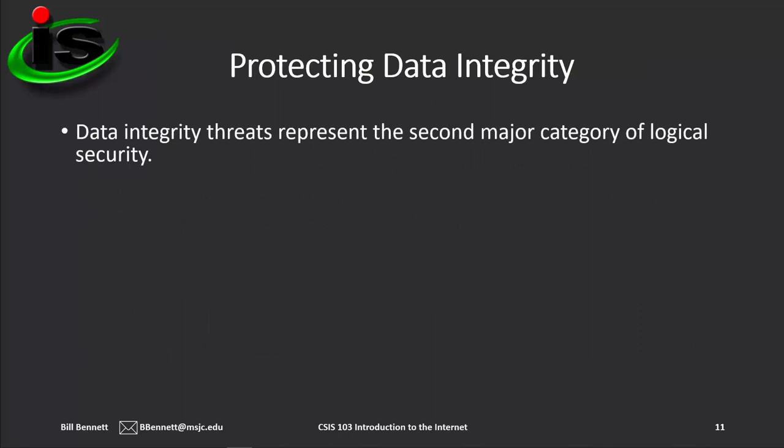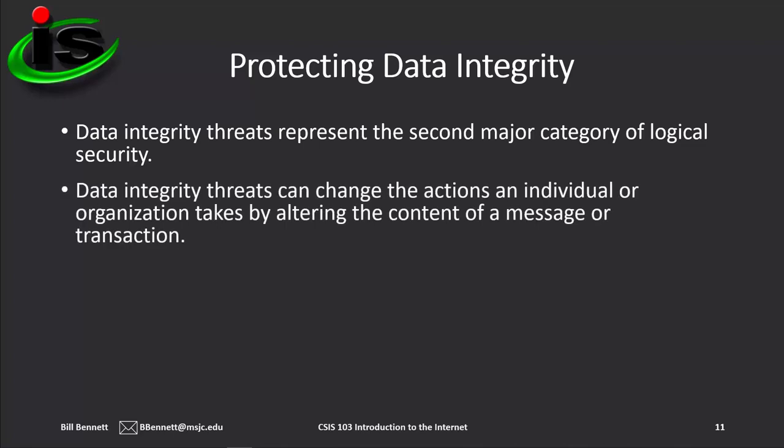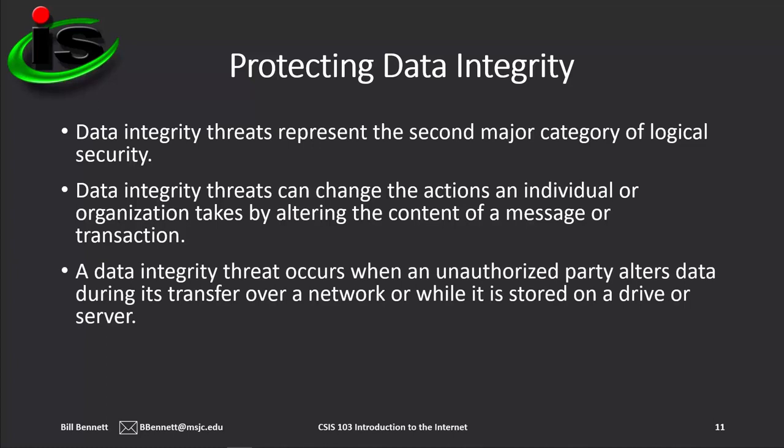Data integrity threats represent the second major category of logical security. Unlike secrecy threats, in which someone simply sees or steals information, integrity threats can change the actions an individual or organization takes by altering the content of a message or a transaction. An integrity attack occurs when an unauthorized party alters data during its transfer over a network or while it's stored on a device or server. For example, suppose a lawyer uses a company's official website to request a transcript of a legal meeting, but an attacker prevents the site from receiving the request — thereby compromising the integrity of the reservation data. Alternatively, an attacker could use multiple fictitious names to reserve space with the company, preventing it from scheduling services with real clients.